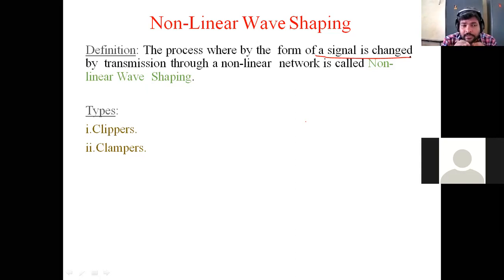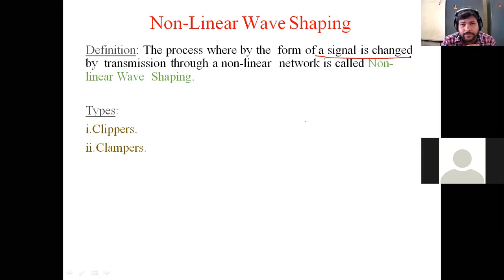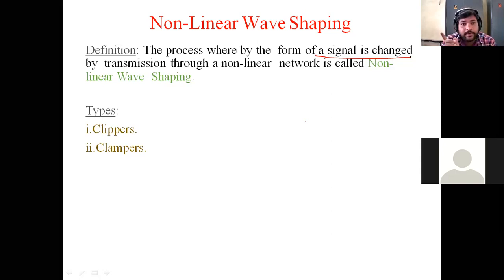When a non-sinusoidal signal is transmitted through a linear circuit, the output is changed — that is linear wave shaping. In a linear network, if we apply a sinusoidal signal, the output is also sinusoidal in nature. But when non-sinusoidal signals are applied, the output is not the same; the signal compulsorily changes at the output.